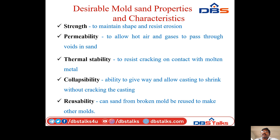Desirable mould sand properties and characteristics: Strength — to maintain shape and resist erosion. Permeability — to allow hot air and gases to pass through. Thermal stability — to restrict cracking on contact with molten metal. Collapsability — the ability to give way and allow casting to shake without cracking the casting. Reusability — can sand from a broken mould be reused to make another mould?